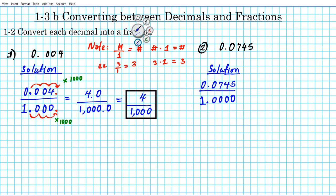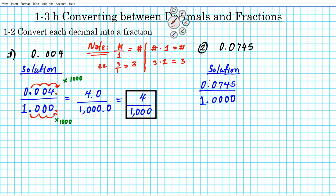Is this fraction any different from the original? No — dividing or multiplying a number by one gives you that same number, so this is the same as what we started with. Now we move the decimal point an equivalent number of places in both the numerator and denominator so it ends up to the right of the last non-zero digit. In the numerator, move it one, two, three, four places to the right.